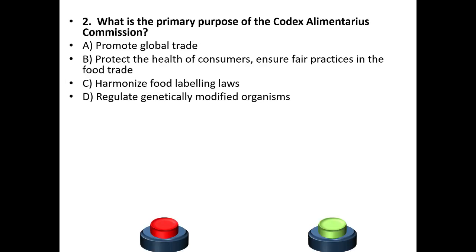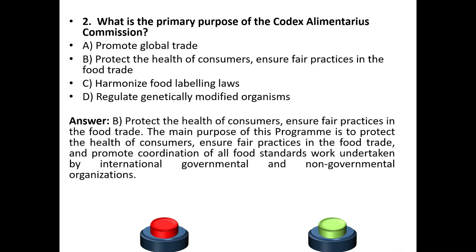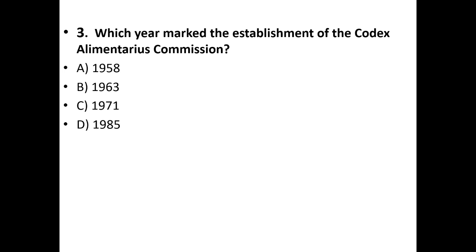Second question: What is the primary purpose of the Codex Alimentarius Commission? A) Promote global trade, B) Protect the health of consumers and ensure fair practices in the food trade, C) Harmonize food labeling laws, D) Regulate genetically modified organisms. The answer is option B. The main purpose is to protect the health of consumers, ensure fair practices in the food trade, and promote coordination of all food standards work undertaken by international governmental and non-governmental organizations.